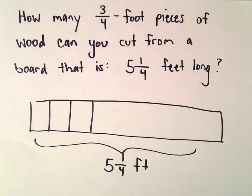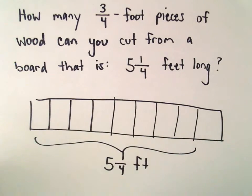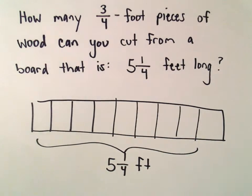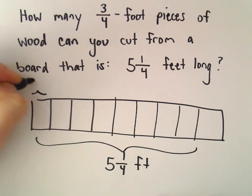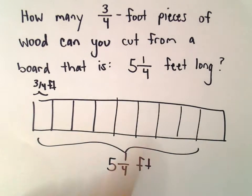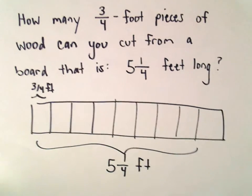So you can probably see it through there. I've got my little picture here. Suppose we've got our board here. It's five and one-fourth feet long. And we're going to cut it up into these little planks that are three-fourths of a foot long each. So I just put some arbitrary number in there. Don't count them up and say that's not right, because I doubt it is.